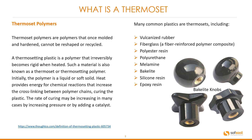Initially the polymer is a liquid or soft solid. Heat provides energy for chemical reactions that increase the cross-linking between polymer chains, curing the plastic. The rate of curing may be increased in many cases by increasing pressure or by adding a catalyst.